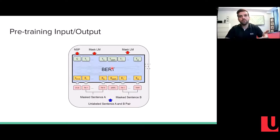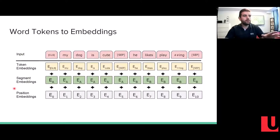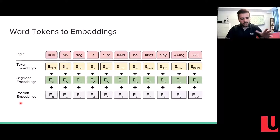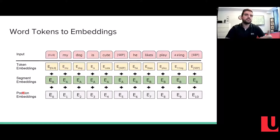The number of word vectors that we input is the same as the number of word vectors that we output. We take the sentences as input and convert them to embeddings. This is a three-step process — the initial embeddings are constructed from three vectors: token embeddings, segment embeddings, and position embeddings.